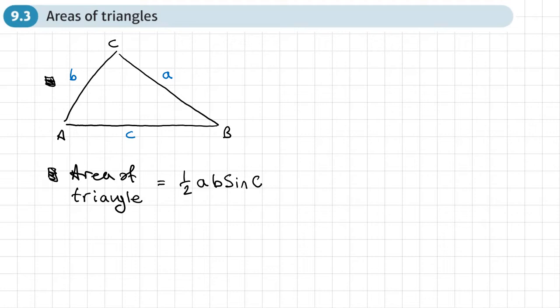So we've got side A, which is this side here. We've got side B, which is this side here. And then we've got angle C, which is this angle here.